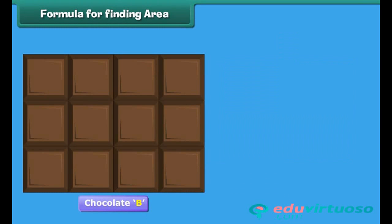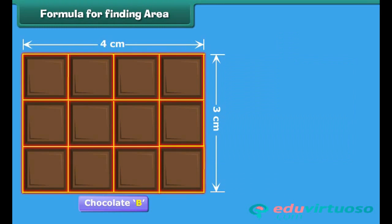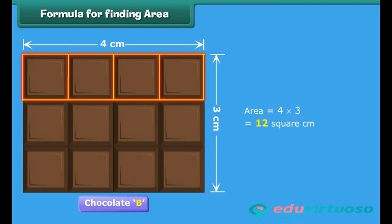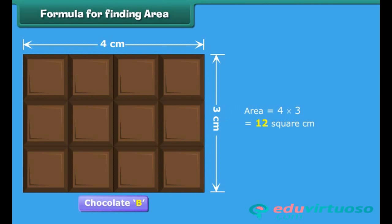We have found the area of chocolate B by counting the total number of squares on it. Alternatively, we can also calculate the area just by multiplying the number of squares along the length of the chocolate with the number of squares along its width. Thus, area equals length multiplied by width.